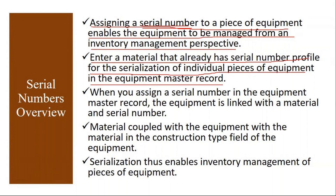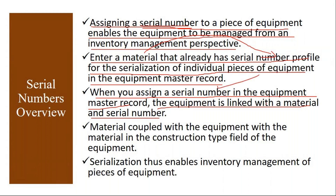To maintain serial numbers for equipment, you first have to create it as a material, and that material should have the serial number profile. When you assign a serial number in the equipment master record, the equipment is linked with the material and serial number. The moment you assign a serial number, there will be a linking with material also. I will show you this in the system.